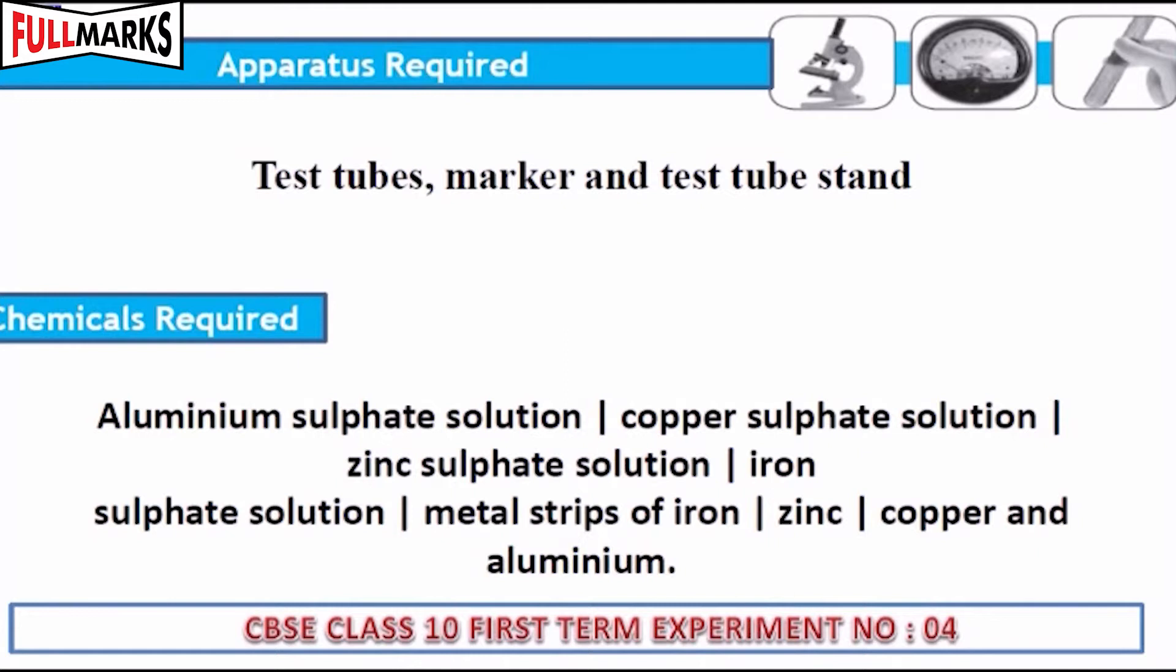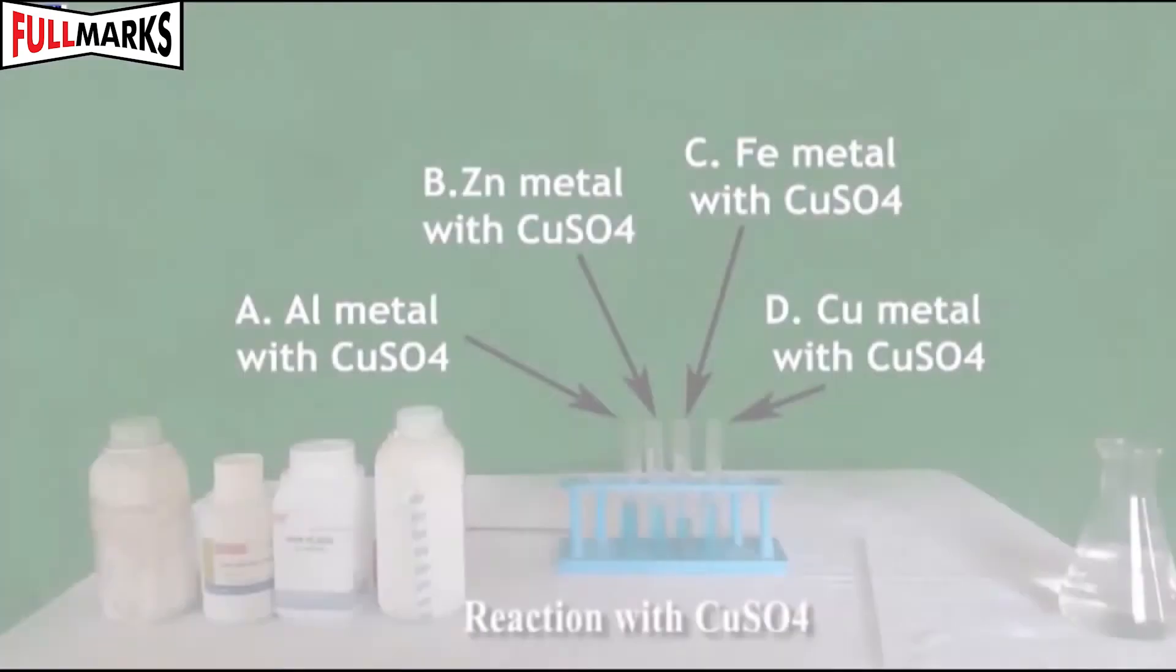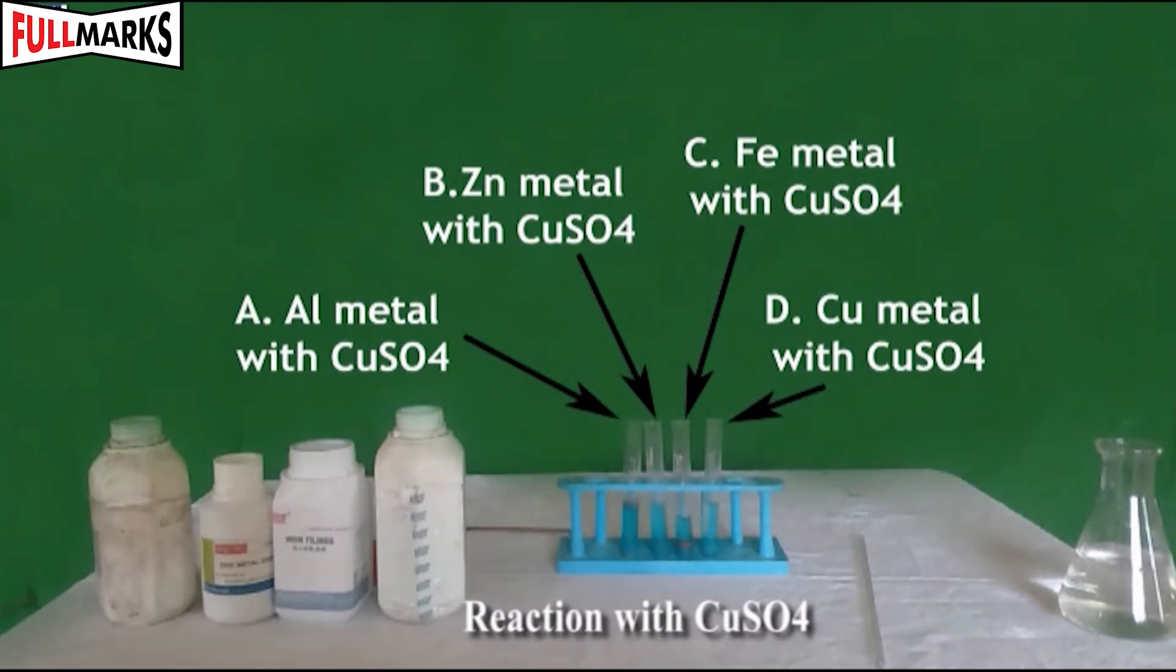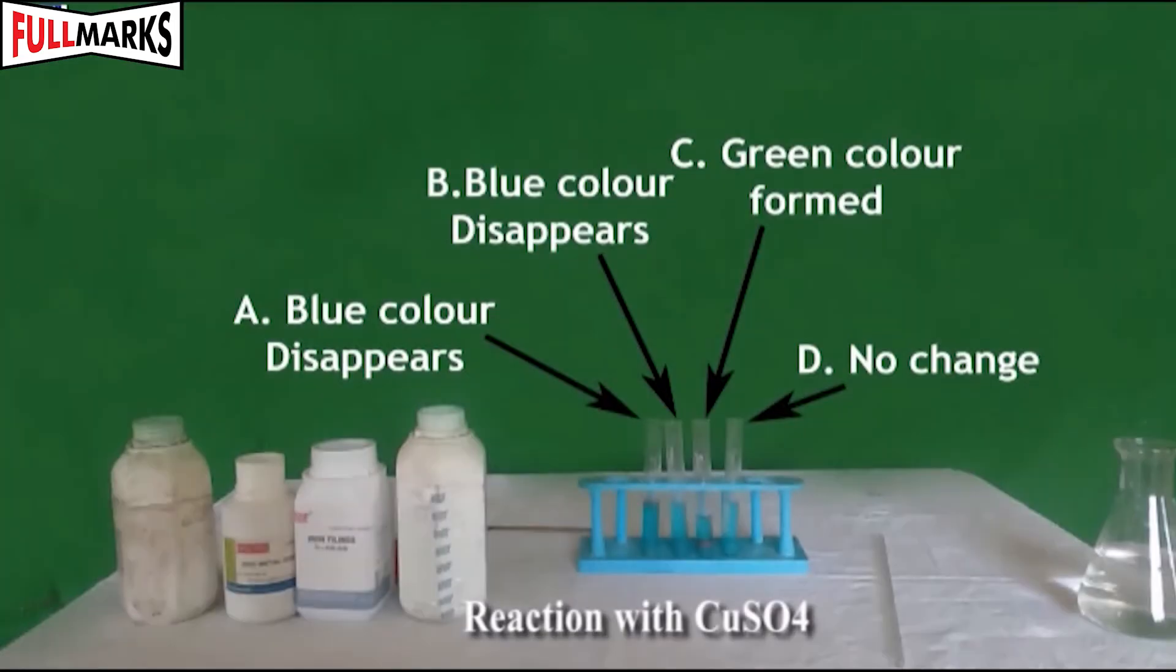Procedure: Reaction with CuSO4 solution. Take copper sulphate solution in each test tube. Dip a small clean piece of aluminium, zinc, iron, and copper metal in each test tube respectively. Record your observations.